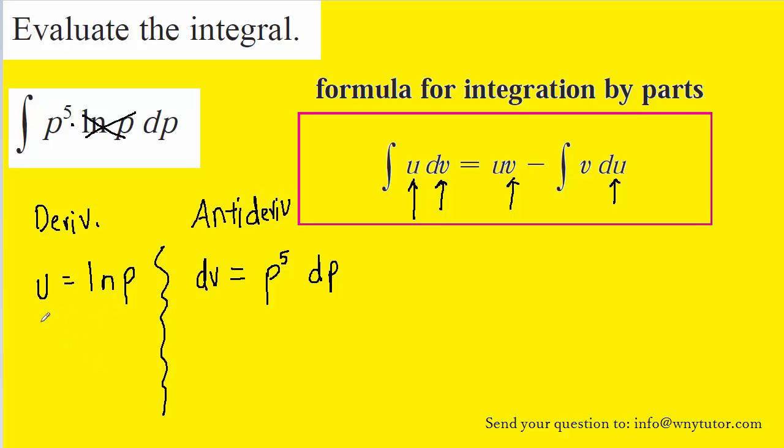So let's go ahead and take the derivative on the left side. The derivative of u with respect to p would be du dp. And as we noted, the derivative of natural log of p is one over p. When we do the antiderivative on the right side, we have v and then the antiderivative of p to the fifth will simply be p to the sixth divided by six.